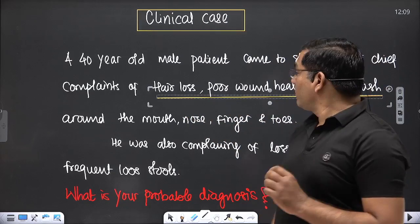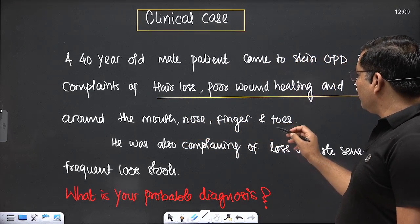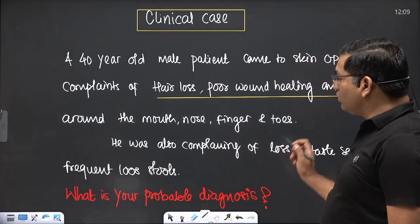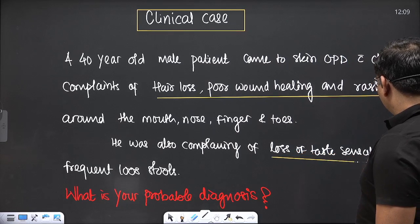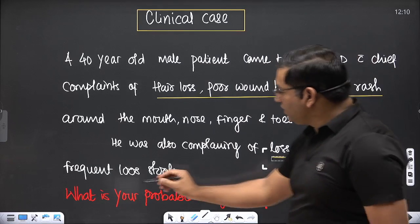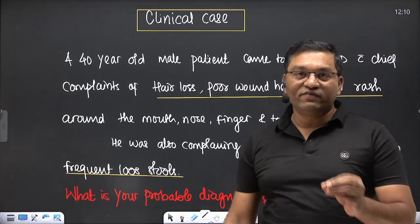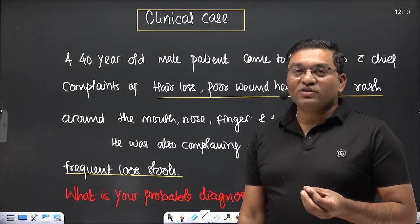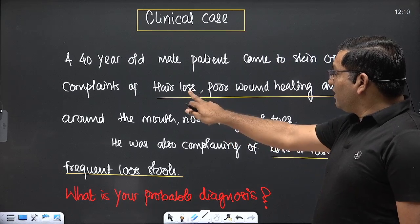The rash was around the mouth, nose, fingers, and toes. He was also complaining of loss of taste sensation and frequent loose stools, meaning diarrhea. What is your probable diagnosis, and which compound is deficient here?